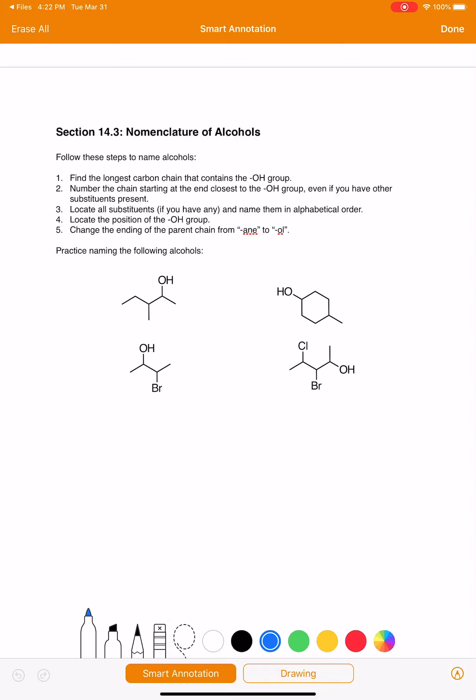Here are four more alcohols for us to practice naming. We're going to use the same steps outlined in this worksheet. The first thing we want to do is find the longest carbon chain that contains the OH group. It looks like our longest carbon chain that includes the OH group is right there.